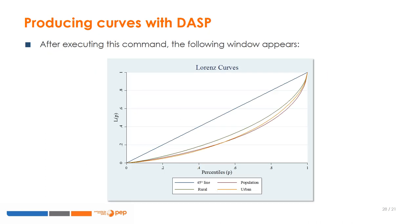We can graph Lorenz curves using the DASP command 'cLorentz' followed by the welfare variable 'exppc'. To estimate Lorenz curves separately for urban and rural zones, we need to indicate the zone variable in the 'hgroup' option. Since we want to estimate inequality measures for the whole population, we need to specify the size of the household in the 'hsize' option. The resulting graph displays the Lorenz curve for the rural, urban, and national population, as well as the perfect equality curve denoted by the 45-degree line.